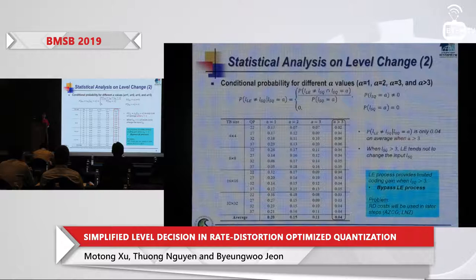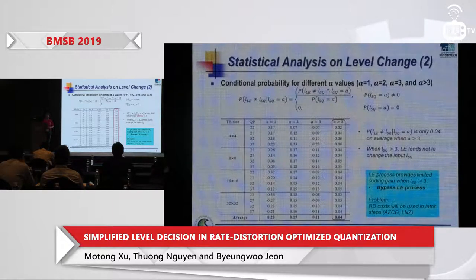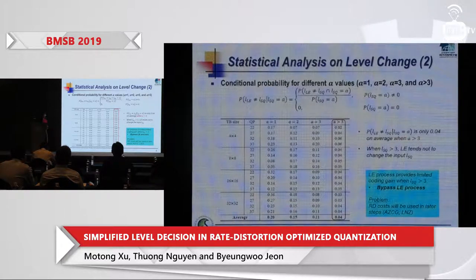This motivated us to bypass the level estimation process, since it provides little coding gain. However, we cannot simply skip it, because the RD cost calculated during level estimation is later used in the all-zero CG determination and in the LNZ step as well.